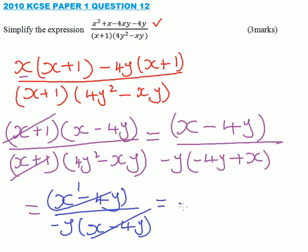So it means that your answer is minus 1 over y, and with that you get 3 marks. So that's how you work out that question.